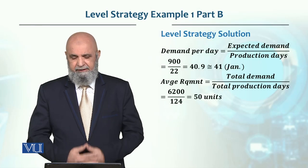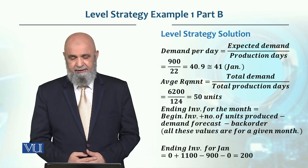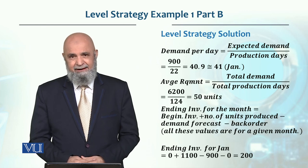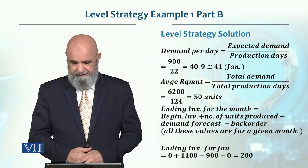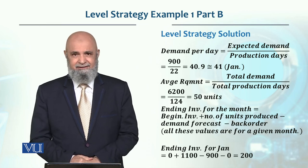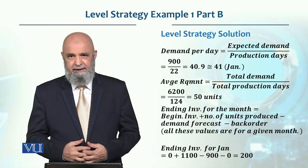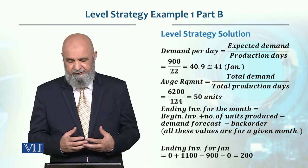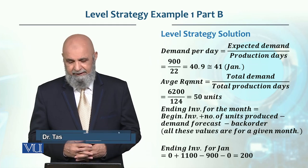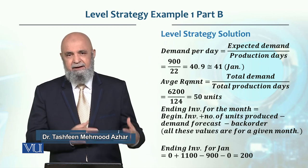Let's solve the problem. In this case, we have a demand per day. We have to find the demand per day. Let's look at an example. In January, there were 900 demand forecast and 22 production days available. So now we have to find the demand per day in January.